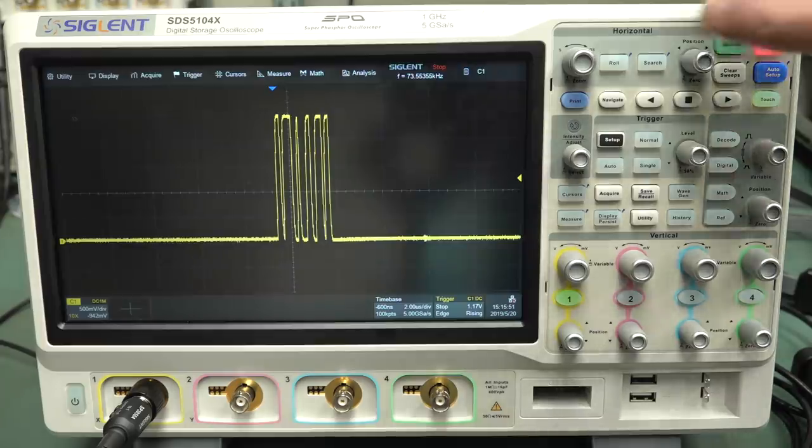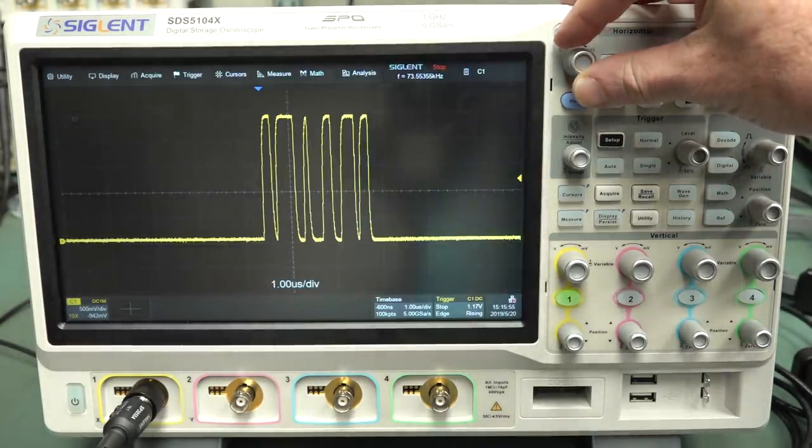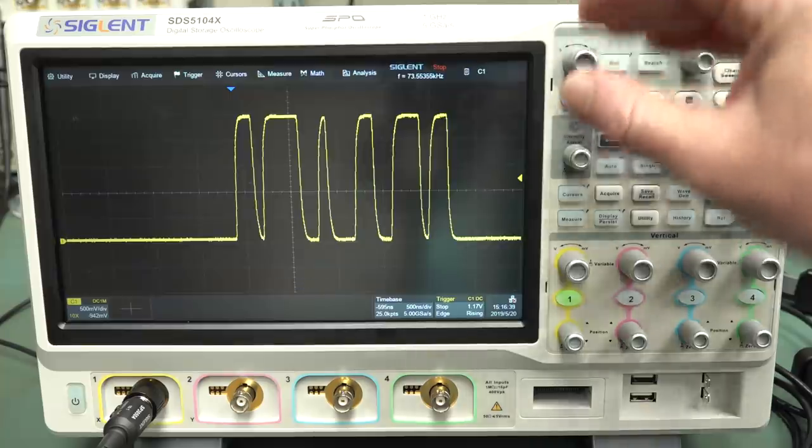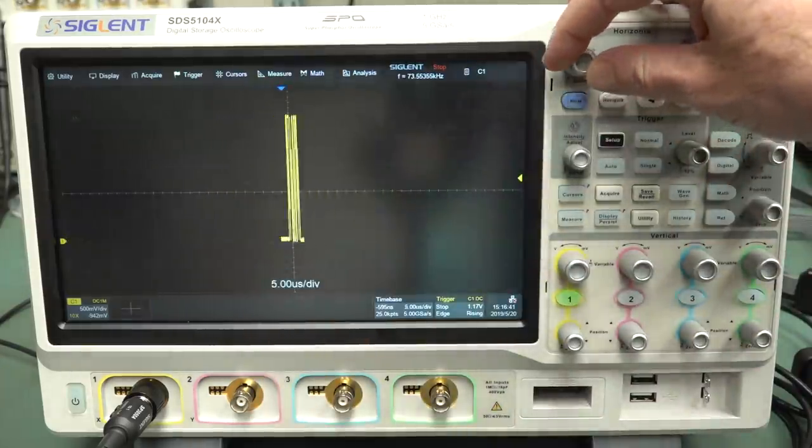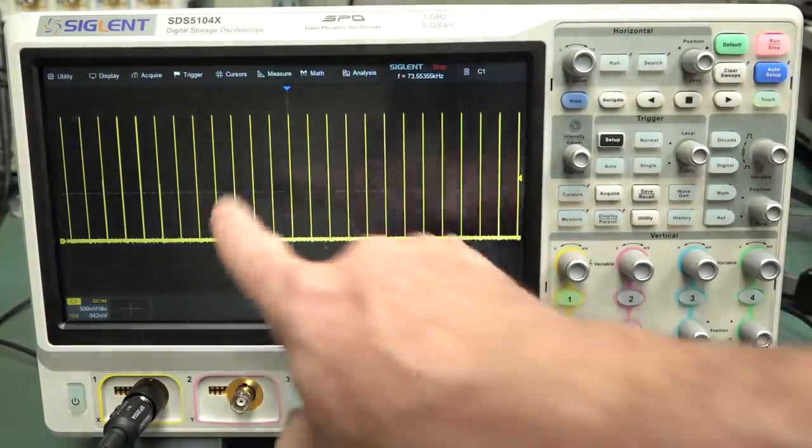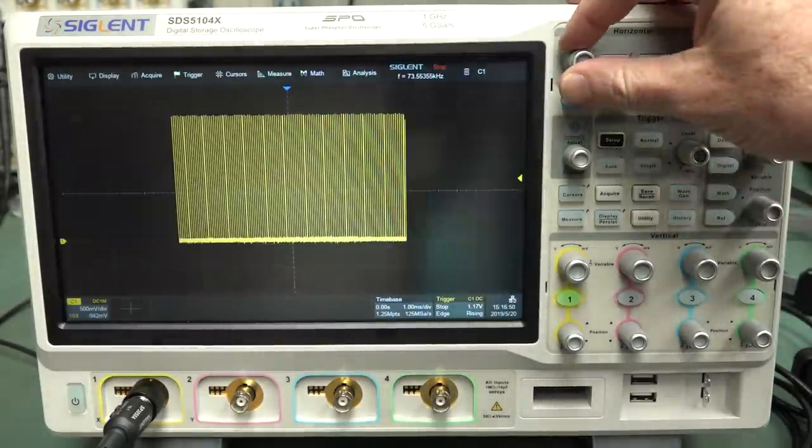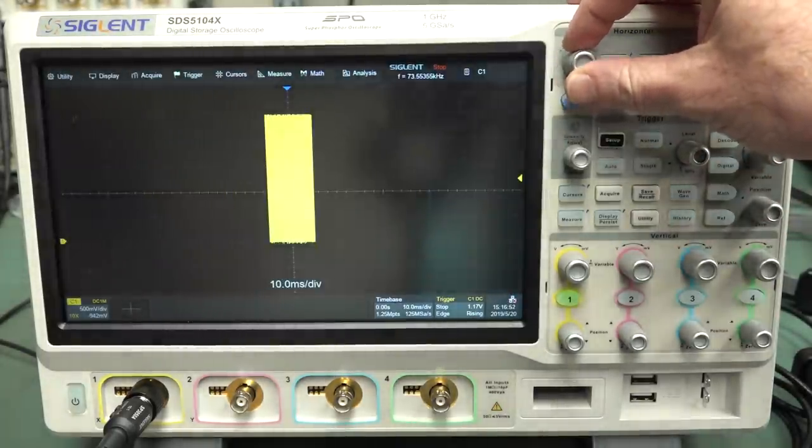Let's single shot capture it again at this time base. That's the signal that's actually there. So what's going on here? As you can see, what we're capturing is just a digital packet here. And if we go out like this, you can see that there's several packets like that. And it's actually a recurring packet of serial data.